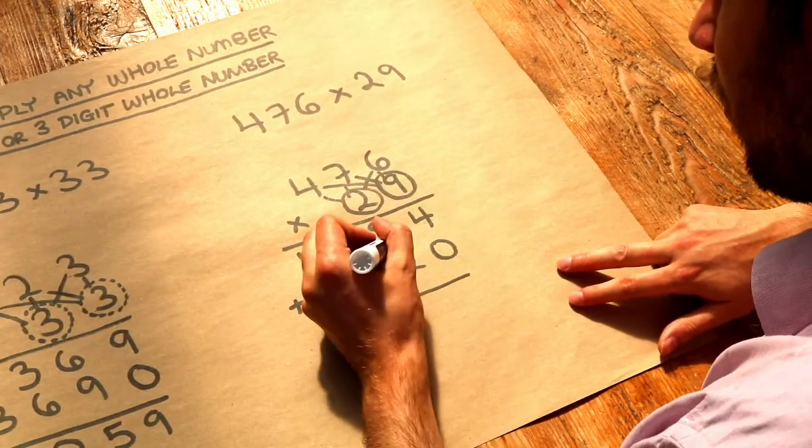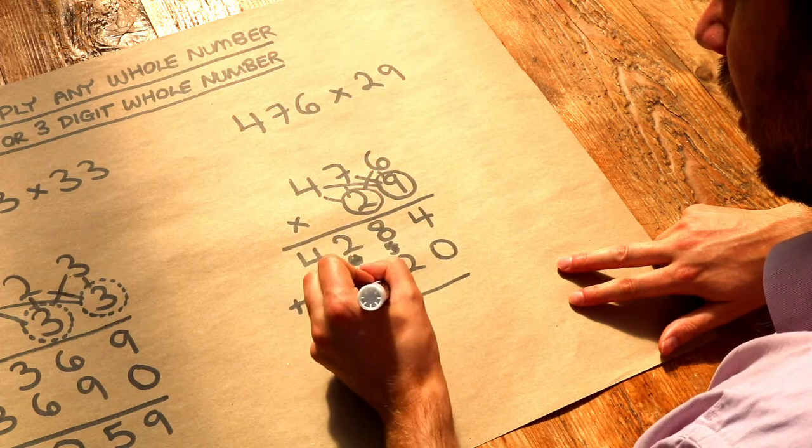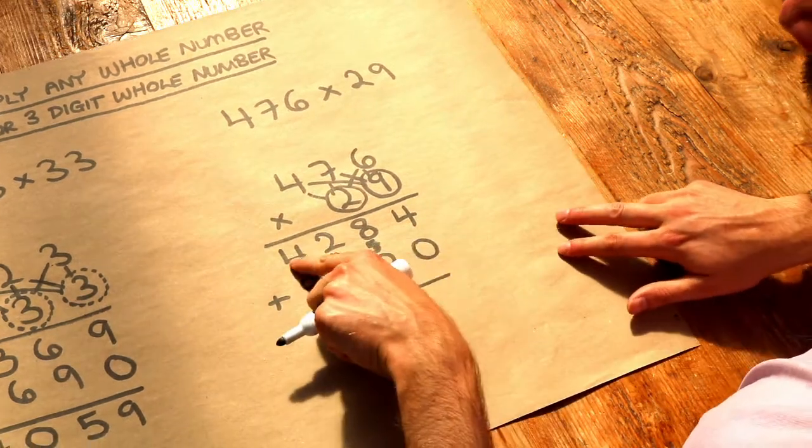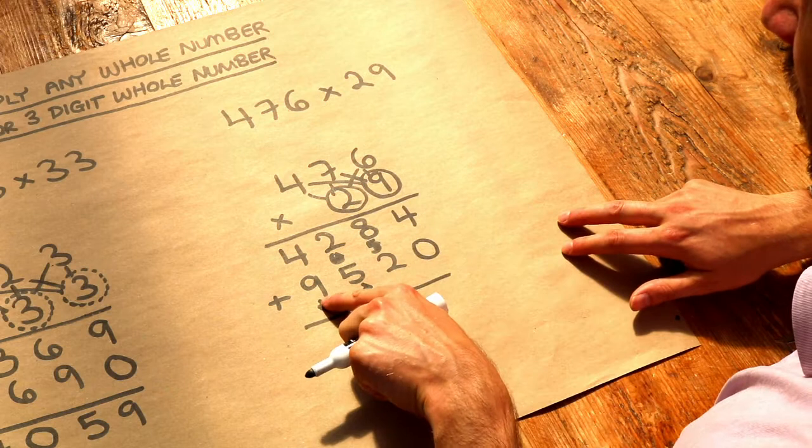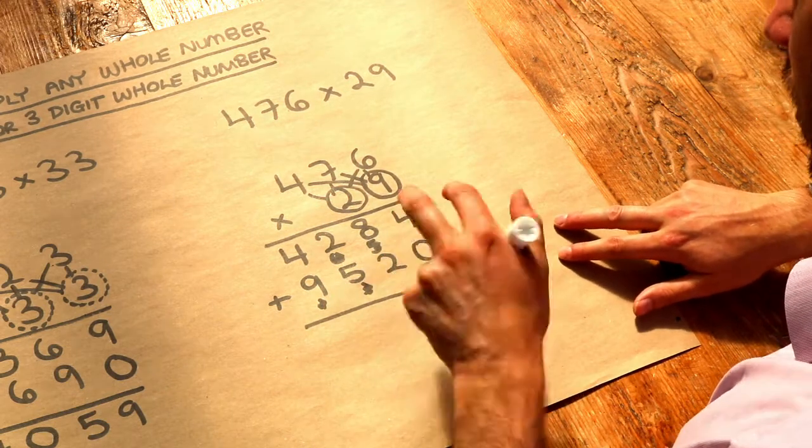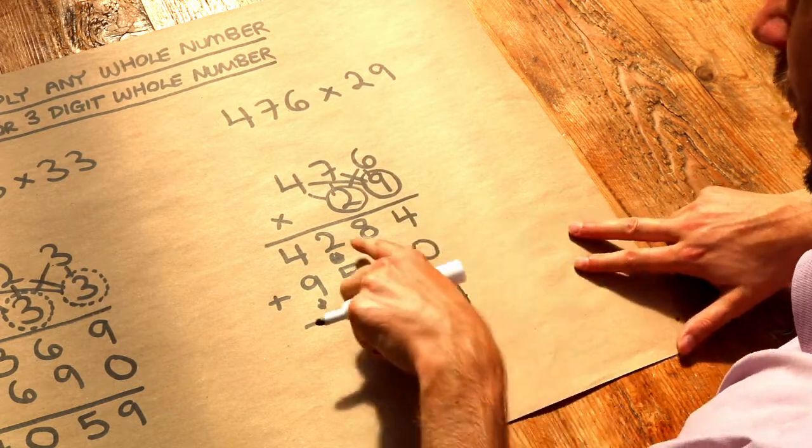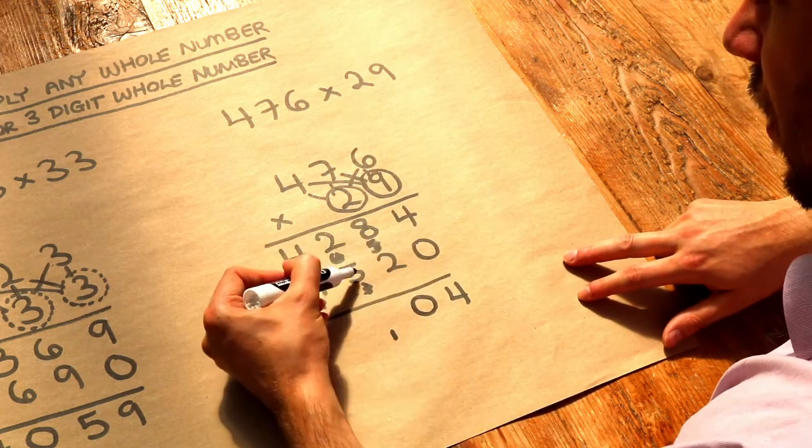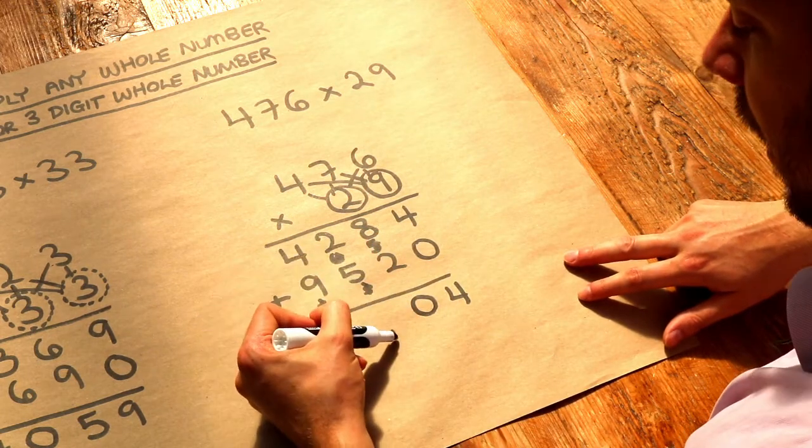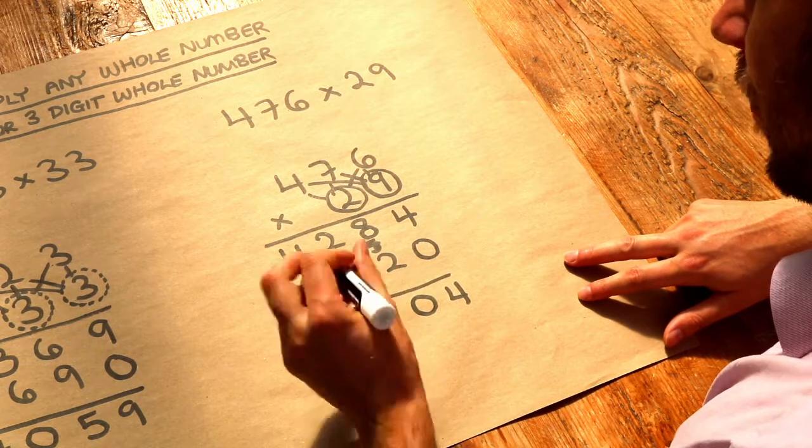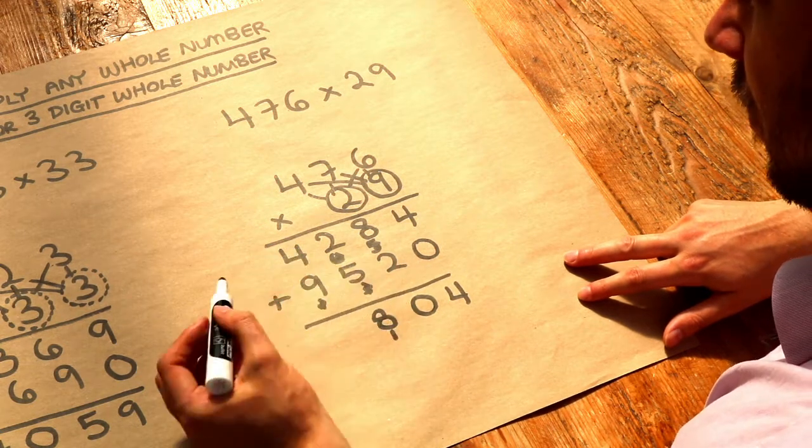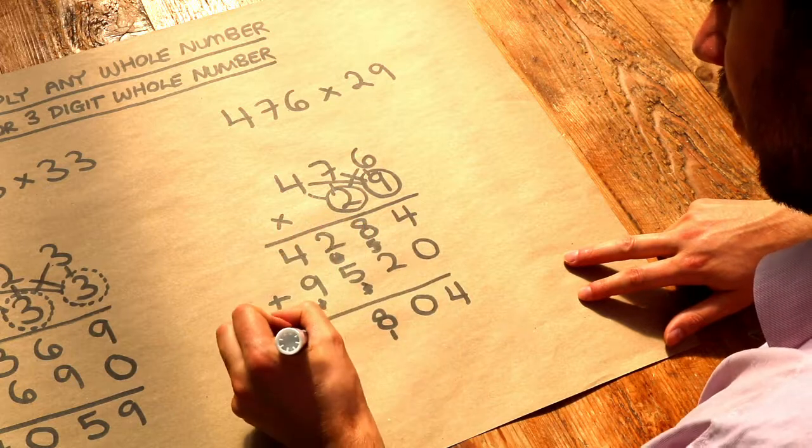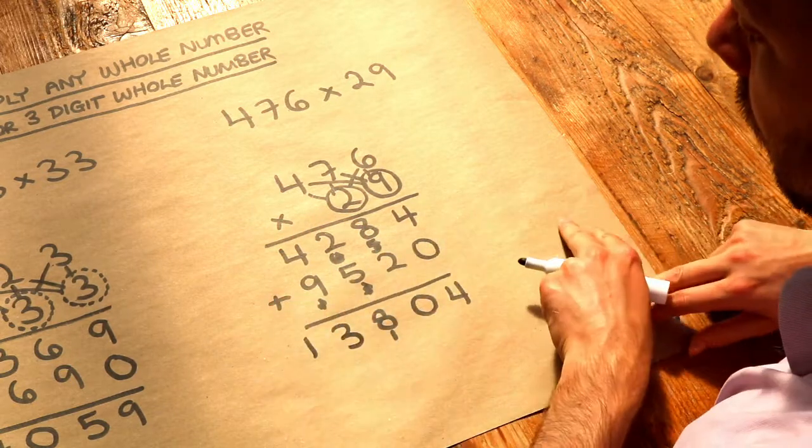And now as before we need to add those two numbers together. So ignore these carries that we have. You might in fact want to cross them out if it's going to confuse you. So we've got 4284 plus 9520. So 4 plus 0 is 4. 8 plus 2 is 10. So 0 carry the 1. 2 plus 5 is 7 plus the carried 1 is 8. And 4 plus 9 is 13. We're at the end so we're just going to write 13. And that is the final answer.